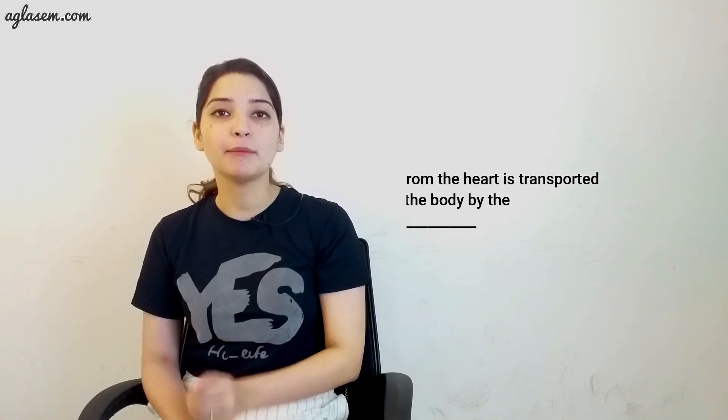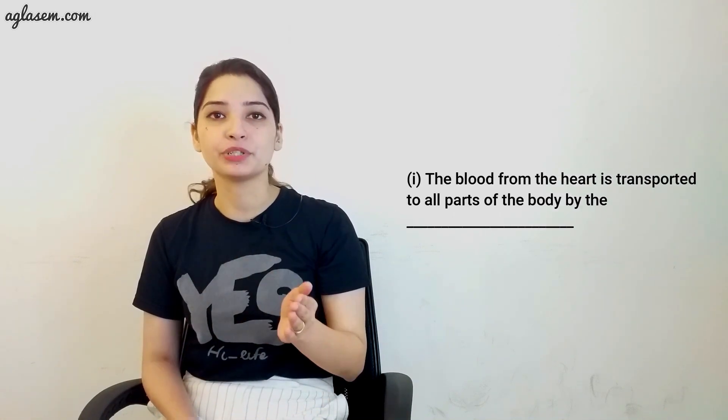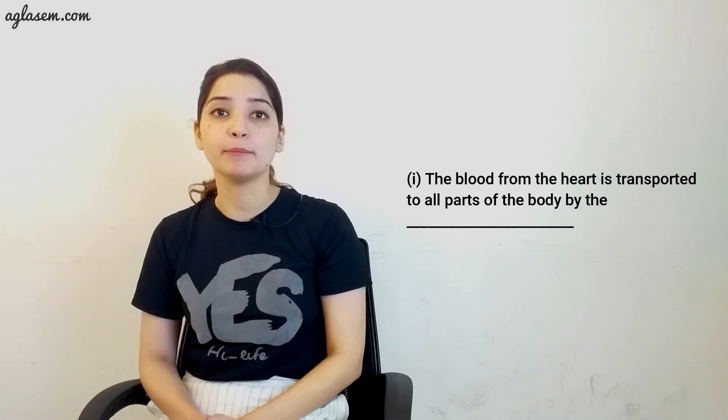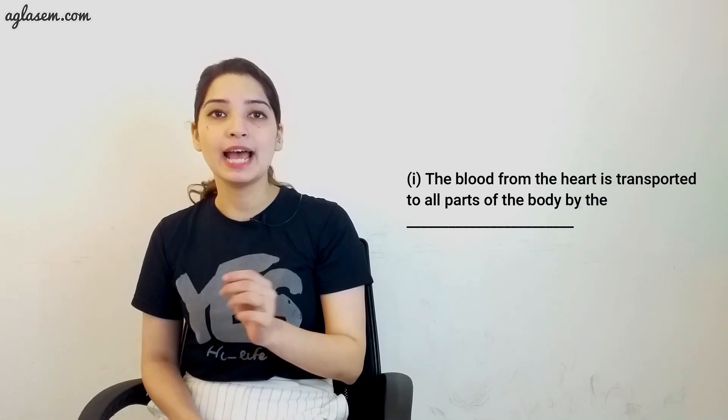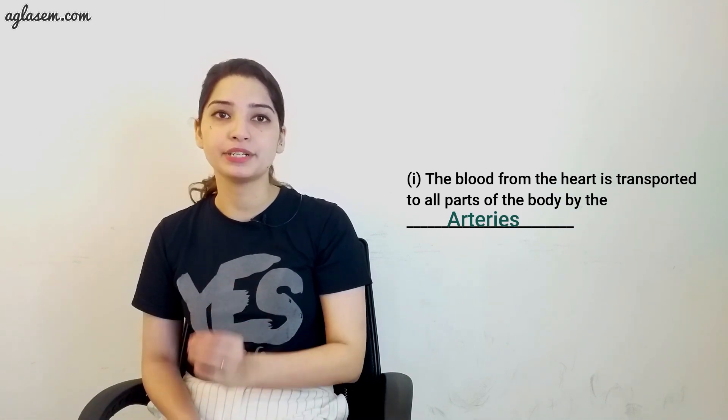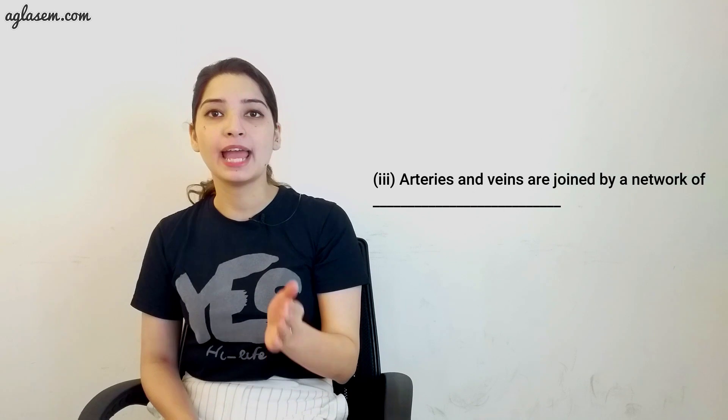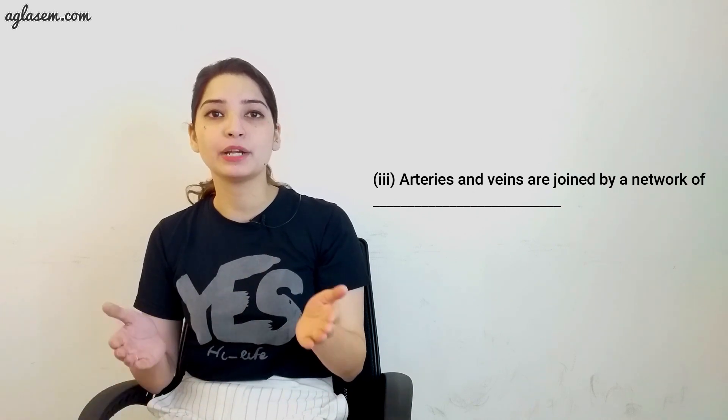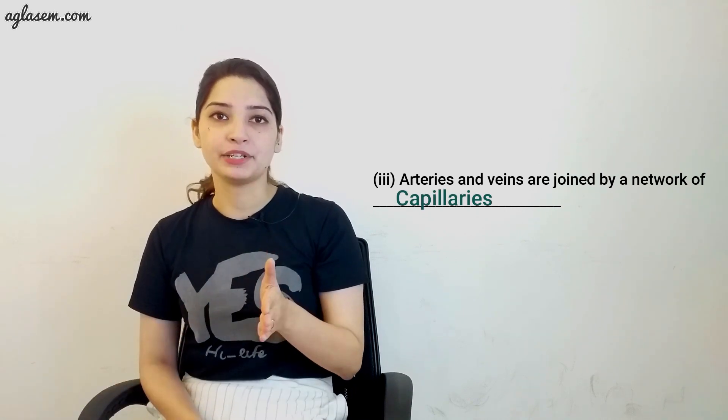Moving on to question 2, fill in the blanks. First, the blood from the heart is transported to all the parts of the body by the arteries. Two, hemoglobin is present in red blood cells. Three, arteries and veins are joined by the network of capillaries.